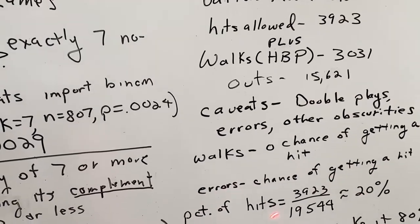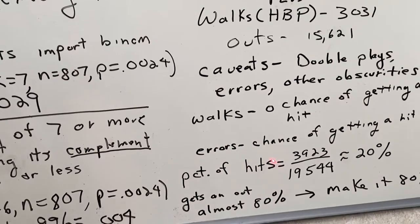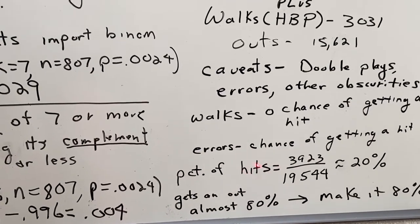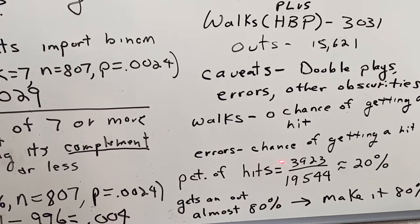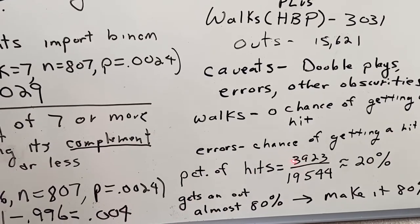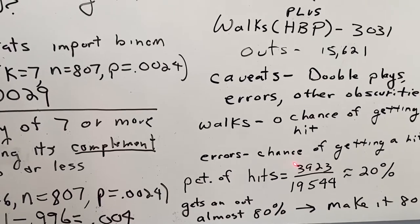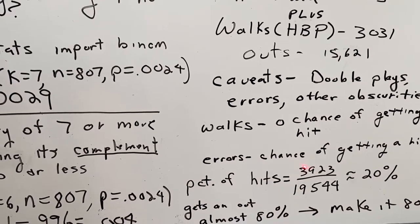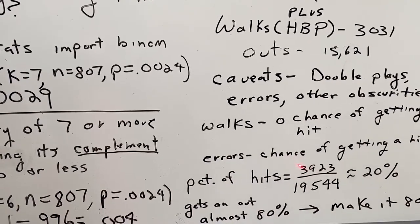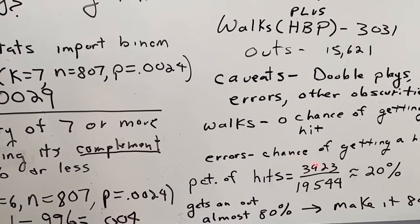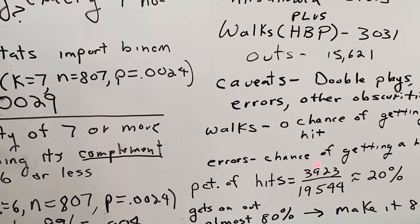But basically, what it comes down to is we look at the percentage of the hits that he gives up. So for the time being, we're going to assume when a batter comes to the plate, one of two things can happen. Either it's a hit, of which we said he allowed 3923, or it's an out.